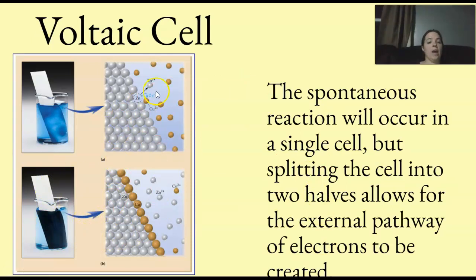So, what you're going to have is the copper is going to plate the zinc, or you would hope that it would. So, spontaneous reactions will occur in a single cell, but splitting the cell into two halves allows for the external pathway of electrons to be created. Now, if you think about it, we had the copper with zinc plating it, so it would cause, you'd have to do more to make this happen.